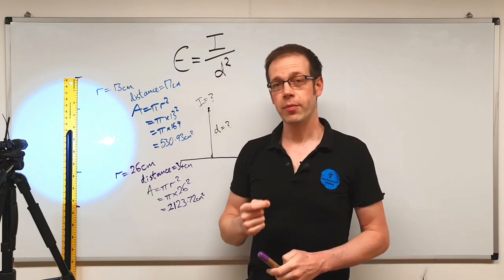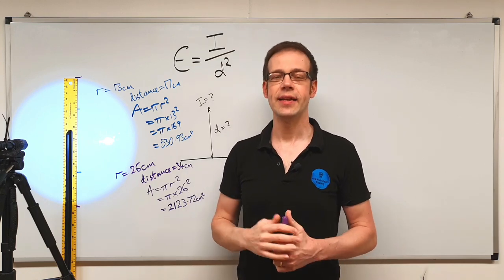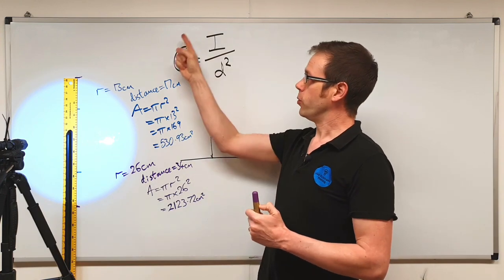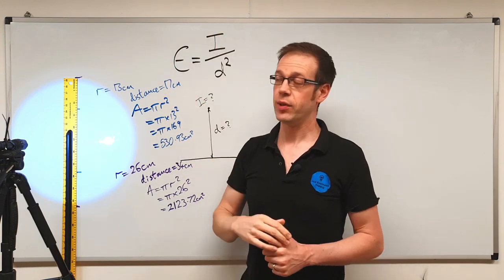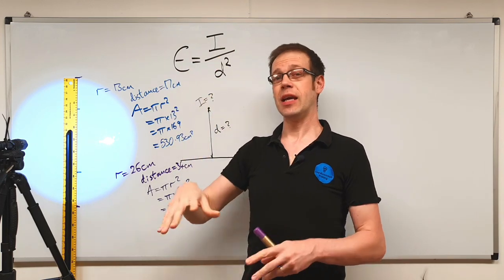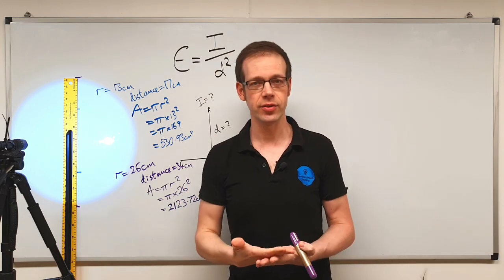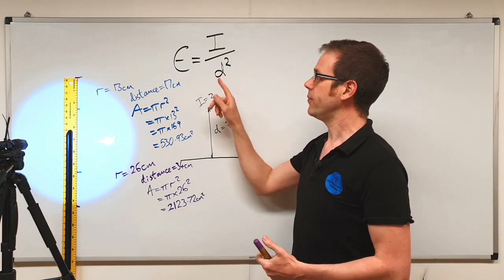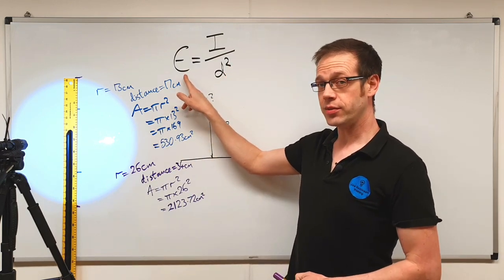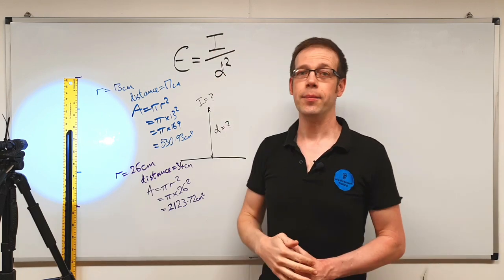Key points to take away from this video: get this formula logged in your brain — E equals I over D squared — as it's an important one you'll need in an exam. E is the illuminance, how brightly lit a surface is. I is the luminous intensity, how powerful or intense a light source is. D is the distance from the light source to the surface. Illuminance is measured in lux, luminous intensity in candelas, and distance in metres.